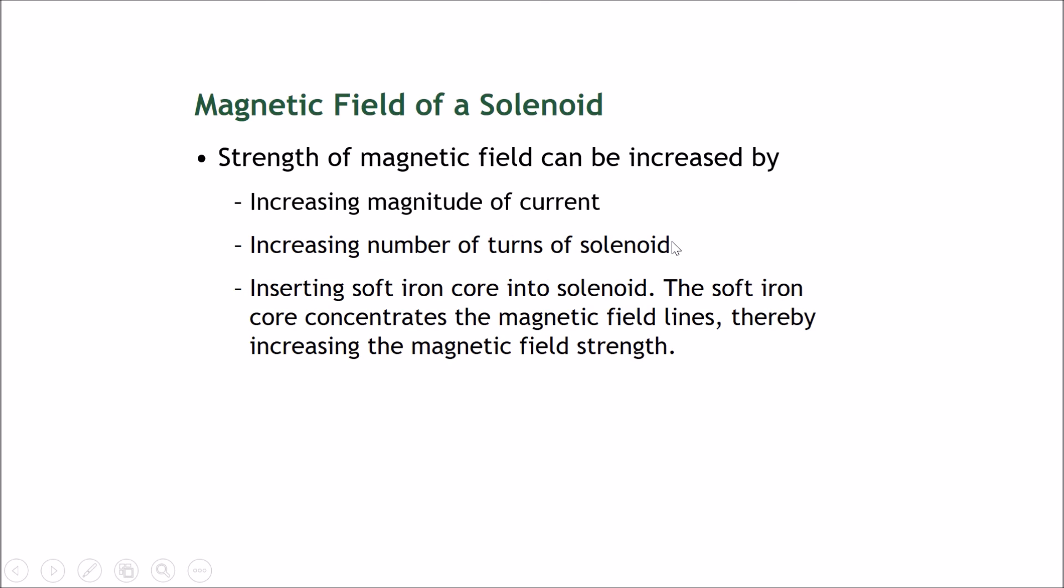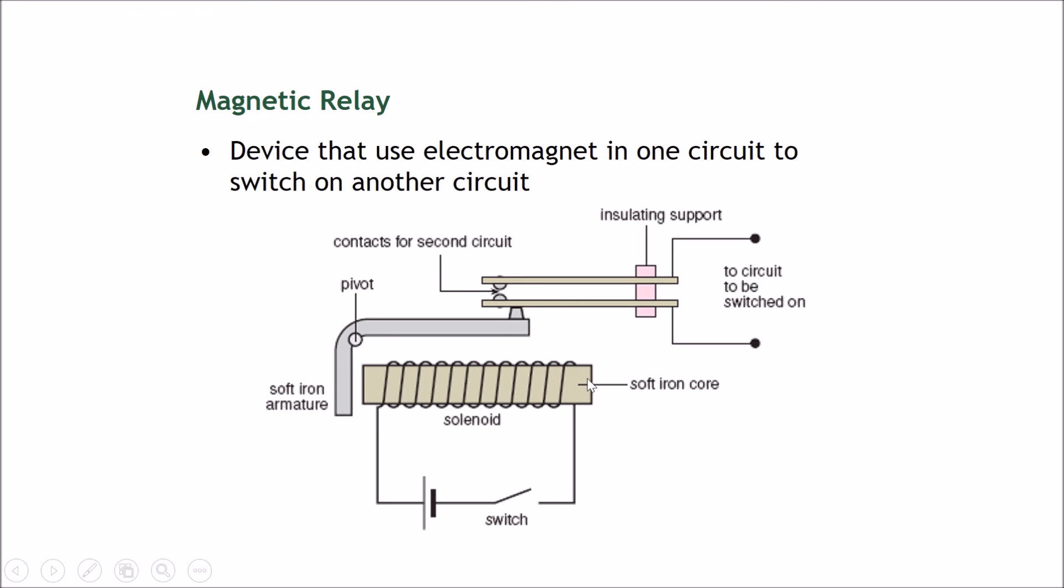However, one third thing that we can do to increase the magnetic field of a solenoid is to just insert a soft iron core into the solenoid. This soft iron core or any magnetic material would concentrate the magnetic field lines. Therefore, it will help to increase the magnetic field strength. So, you can see over here in this device, the magnetic relay, there's a soft iron core stuck into the middle. It's not touching the wires over here, but it helps to concentrate the magnetic field lines.